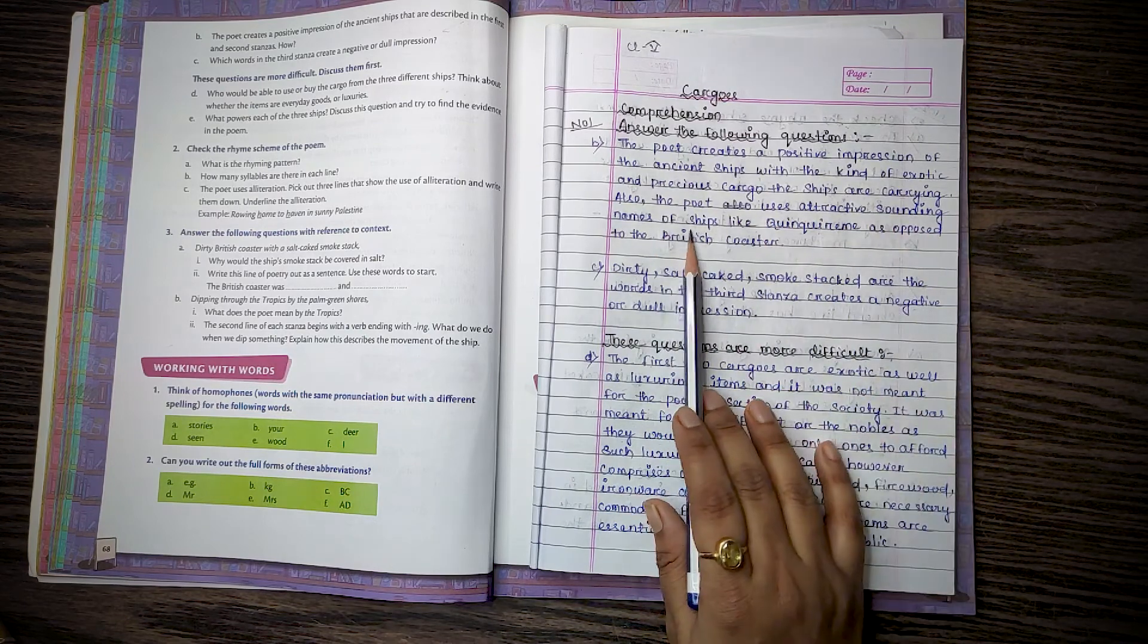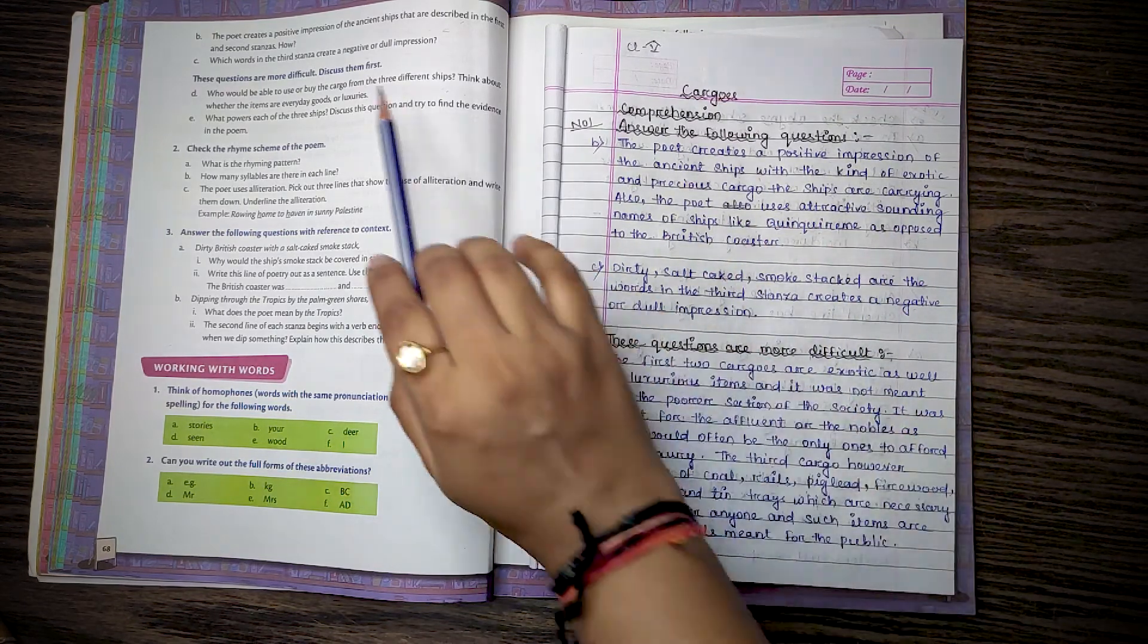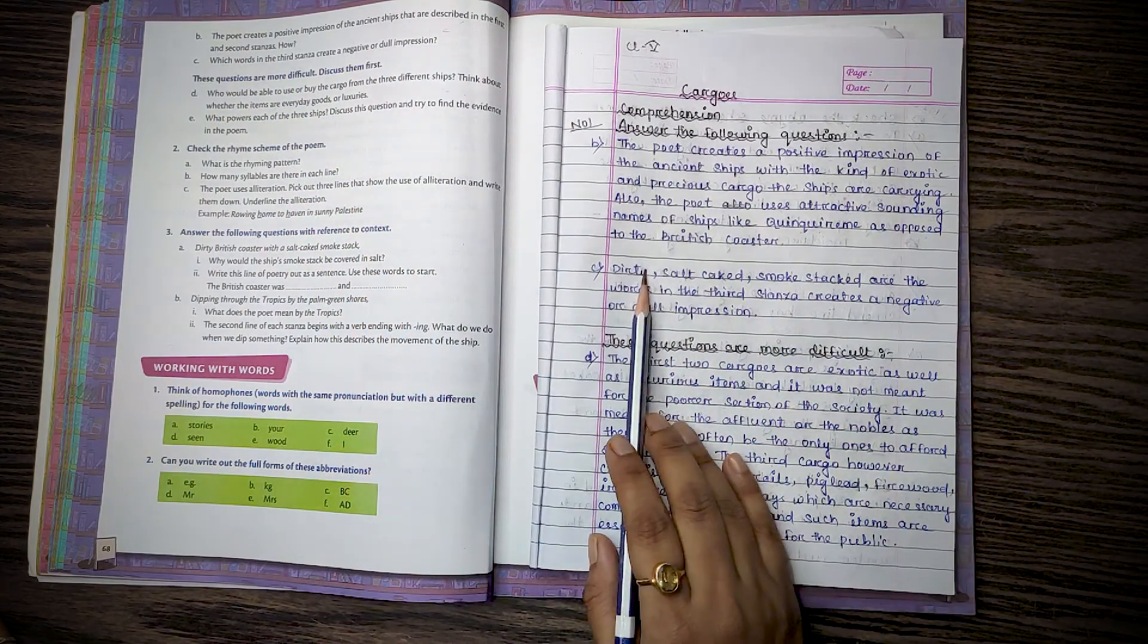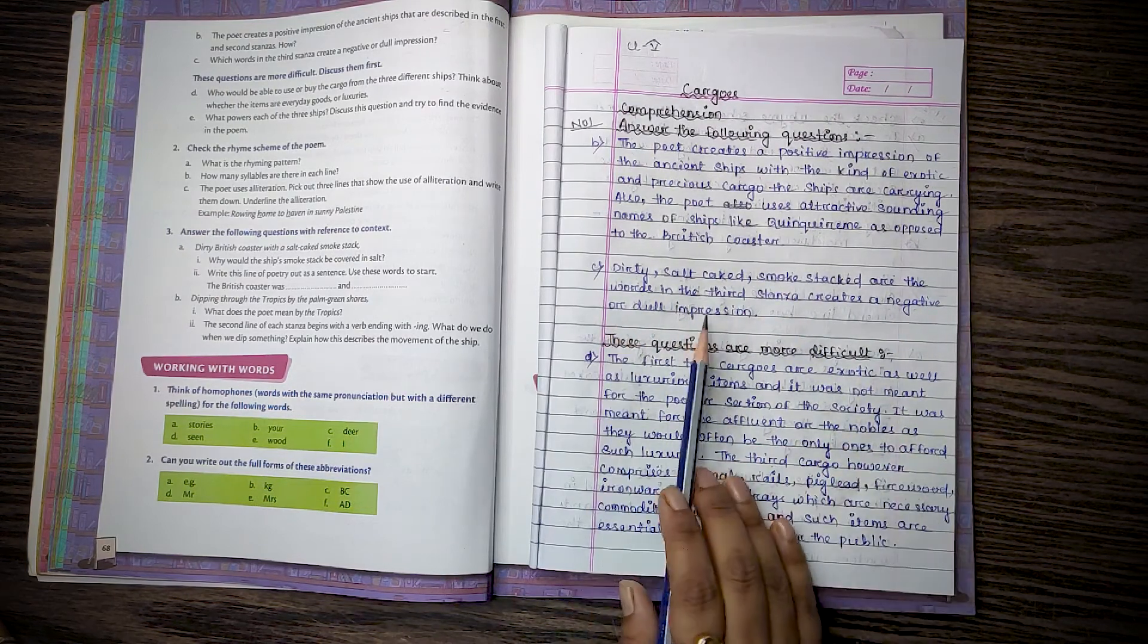Also, the poet uses attractive sounding names of the ships like Queen Crane as opposed to the Beauty's Coaster. Then see, which words in the third stanza create a negative or dull impression? Dirty, salt, caked, smoked stack are the words in the third stanza that create a negative or dull impression.